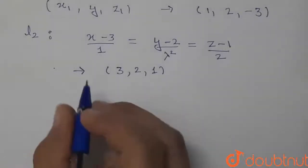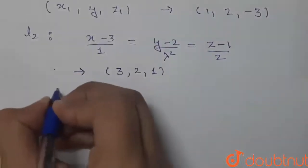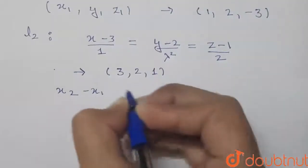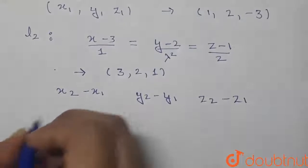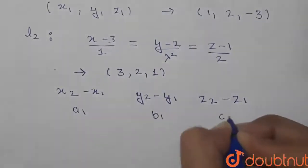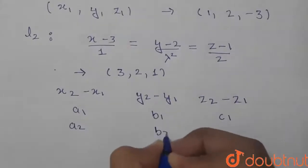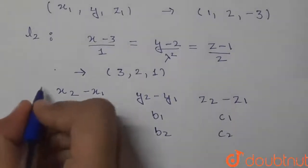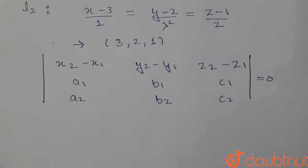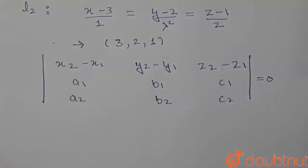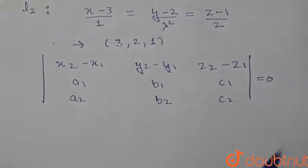Now we know that the condition for coplanarity is that the determinant of the matrix with rows [x₂−x₁, y₂−y₁, z₂−z₁], [a₁, b₁, c₁], and [a₂, b₂, c₂] should be equal to 0. If two lines are coplanar, the determinant of this matrix equals 0, where a₁, b₁, c₁ and a₂, b₂, c₂ are the direction vectors of the two lines.